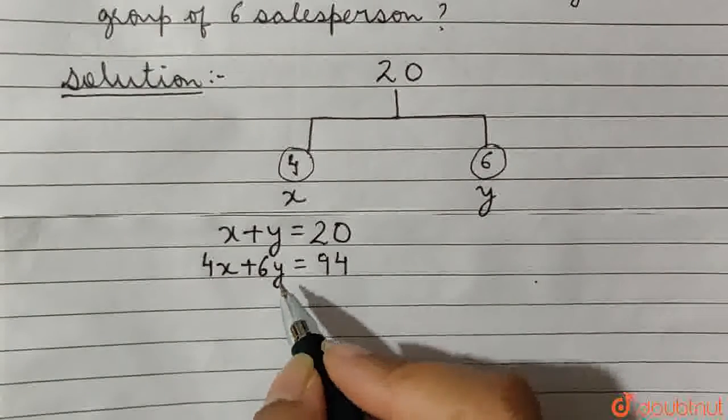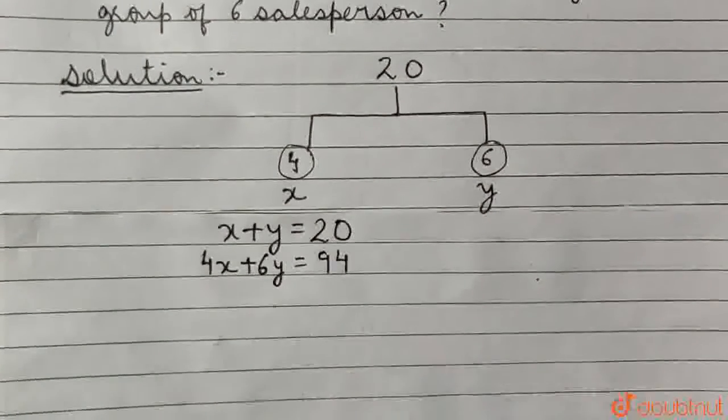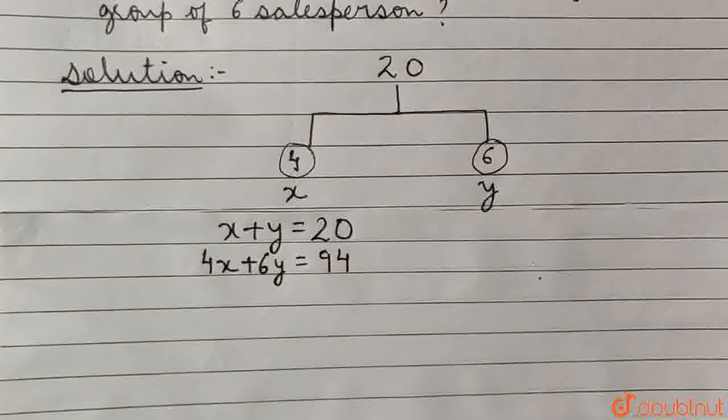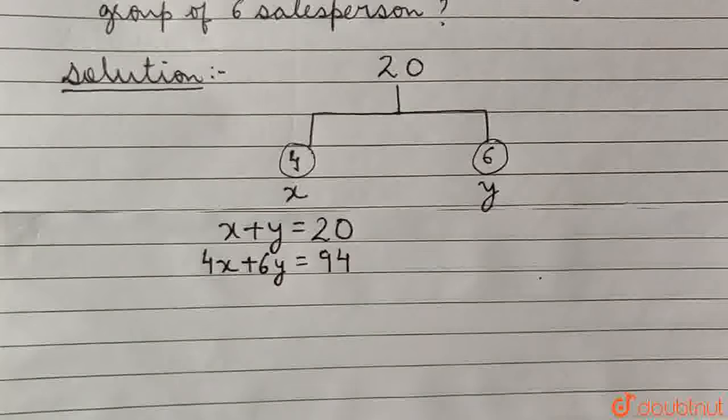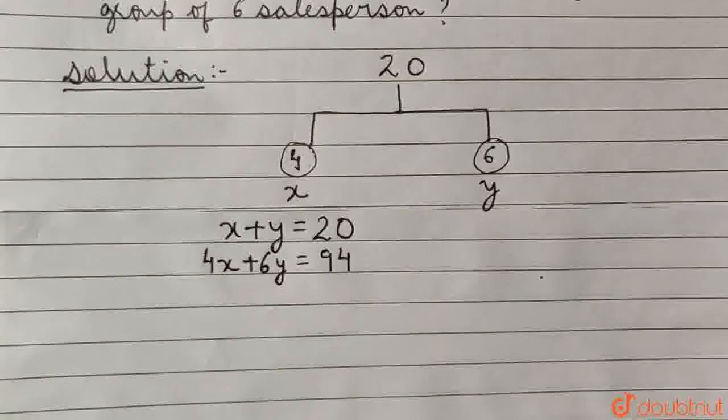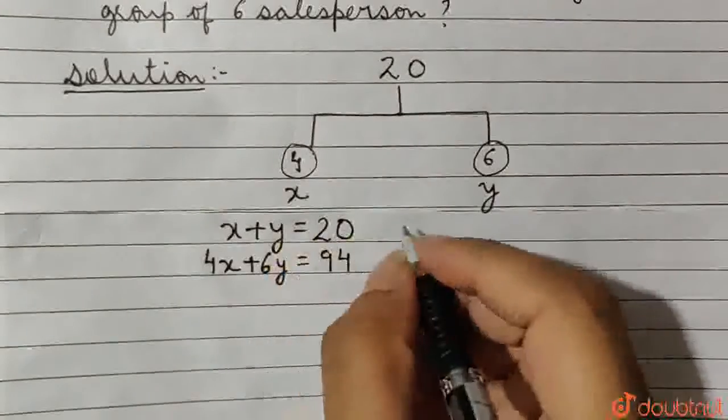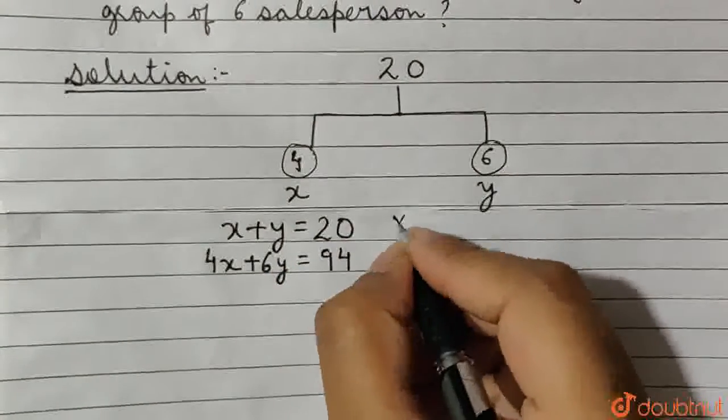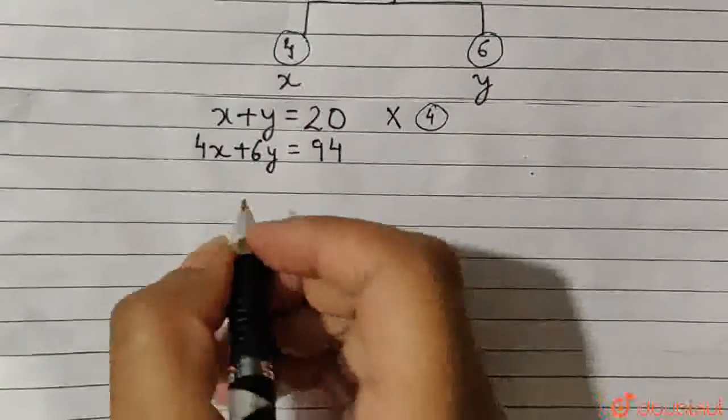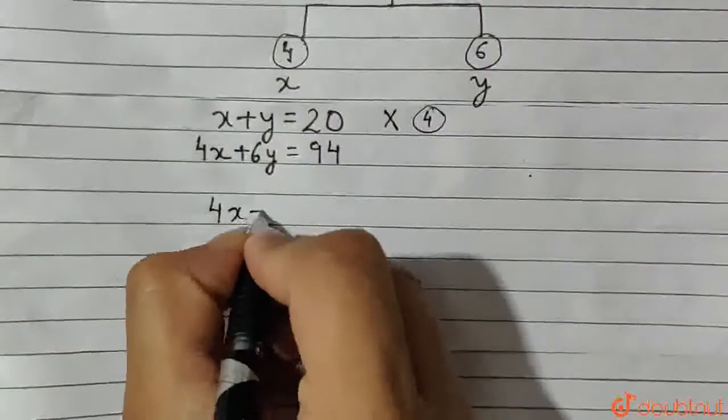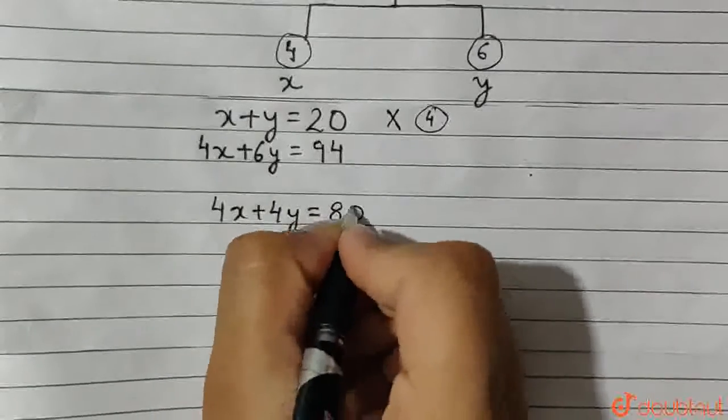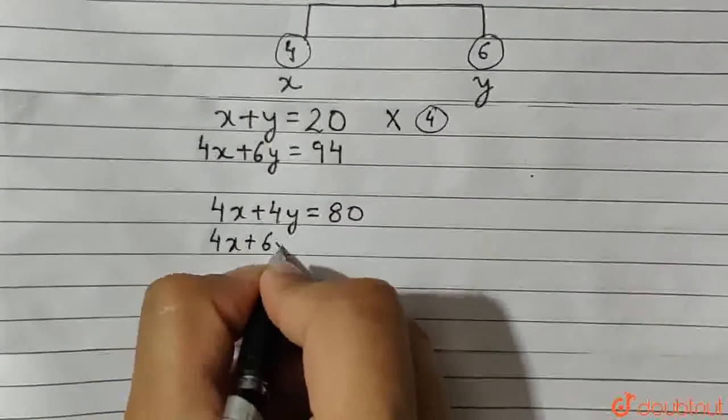We need to solve for Y to obtain how many sub-topics will be discussed in a group of 6. We can use the elimination method by eliminating X to find Y. We multiply the first equation by 4 and obtain 4X plus 4Y equals 80, and keep the second equation as it is.